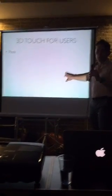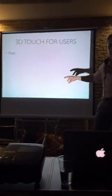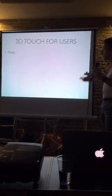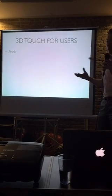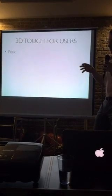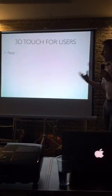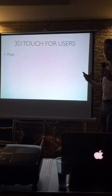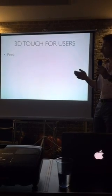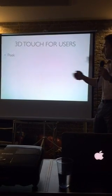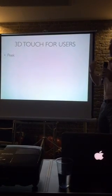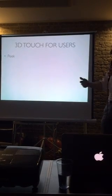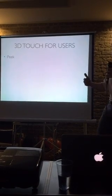If you touch something fairly deeply — an item on the screen — they get this live, content-rich preview of that item, let's say it's a mail or a photograph, without losing their context. So they're not going to a different screen or segwaying to a different view controller. They're in the same space but they can preview that item.